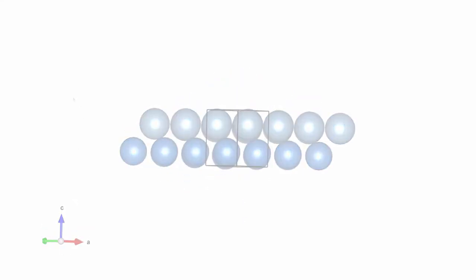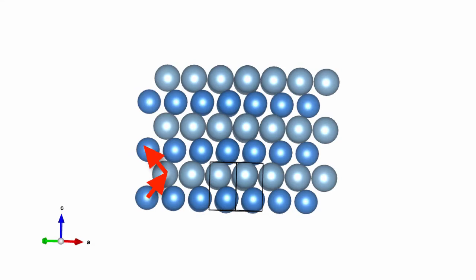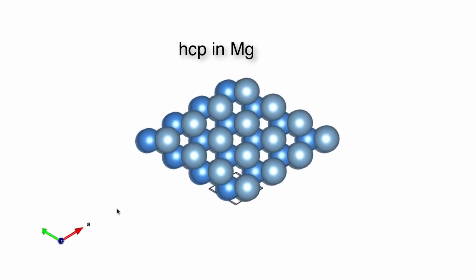So instead of two shifts, you'd have a shift in one direction and then it would shift back into its original position? Yeah. And that type of stacking is seen in magnesium, which has the hexagonal close-packed structure.